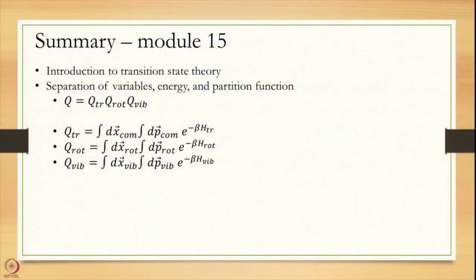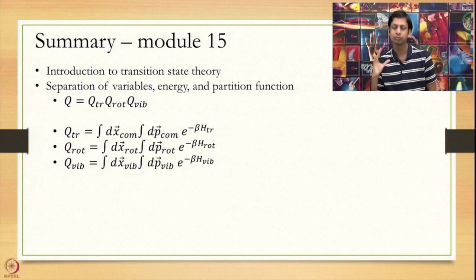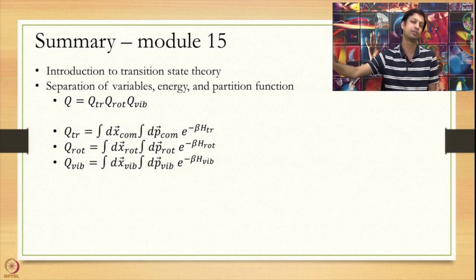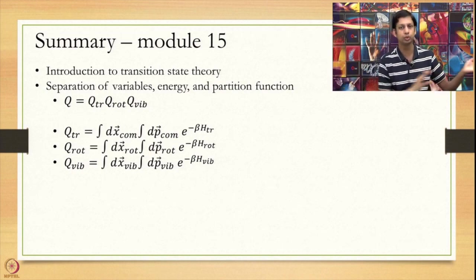In summary, today we first looked at the introduction to Transition State Theory and realized that to solve it we need to know about partition functions. To study partition functions, we divide the partition function into three components: translation, rotation, and vibration. We separate our Hamiltonian into these three as well as our variables, and derive a formula for q_translation, q_rotation, and q_vibration. Concrete expressions for these will be derived in the next module. Thank you.